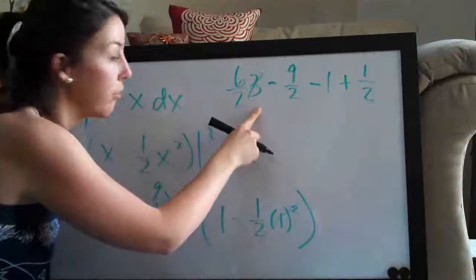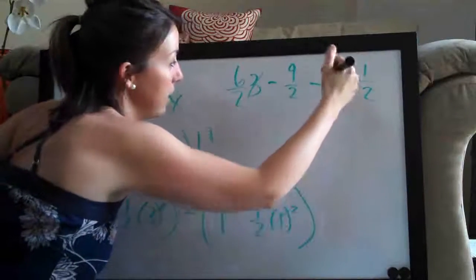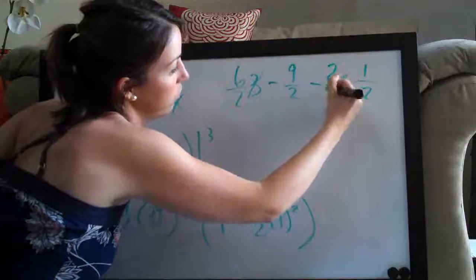Right? 6 halves is the same thing as 3. So we've got 2 on the bottom. I'm going to change this 1 here to 2 halves.